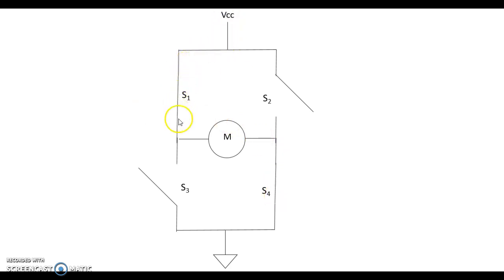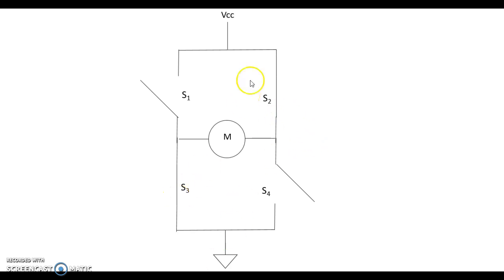If switches S1 and S4 are closed, current leaves through VCC, heads through S1, through the motor in this direction, through S4, and then to ground. This causes the motor to turn in one direction. If instead we close S2 and S3, current goes through S3, through the motor in the opposite direction, and then to ground, causing the motor to turn in the opposite direction. Any other configuration of switches will cause the motor not to turn.